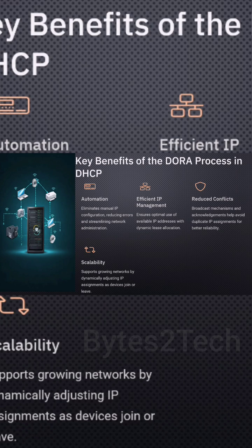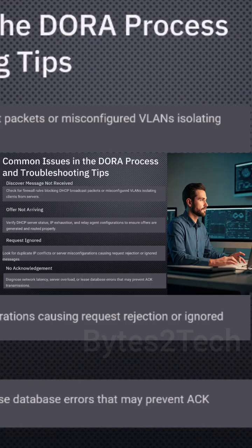Who answers? This must be the Offer part. Any DHCP server on that network that hears the Discover can reply with a DHCP Offer message. It's basically the server saying, hey, I heard you — how about you use this IP address? The offer includes the proposed IP, and maybe other details like the gateway address, DNS servers, and importantly, the lease duration.